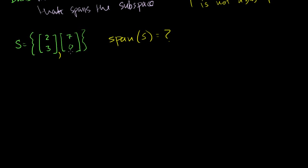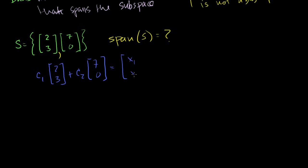Let's see if it spans all of R2. If it does, that means we can always construct anything in R2 with a linear combination. So if c1·(2,3) + c2·(7,0), and this spans all of R2, we should always be able to find c1 and c2 to construct any point in R2. So we get: 2c1 + 7c2 = x1, and 3c1 + 0·c2 = x2.